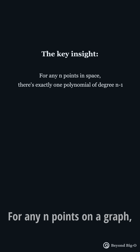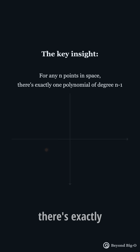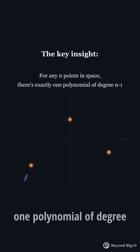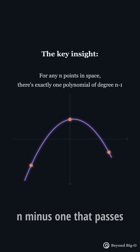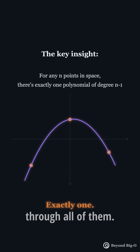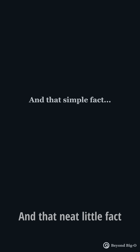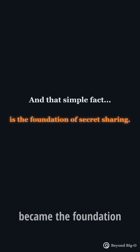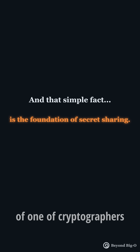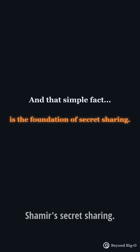Here's the insight. For any N points on a graph, there's exactly one polynomial of degree N-1 that passes through all of them. Not zero, not two — exactly one. And that neat little fact became the foundation of one of cryptography's most elegant ideas: Shamir's secret sharing.